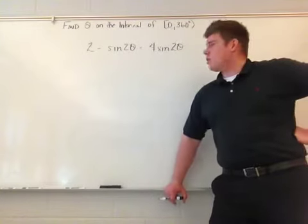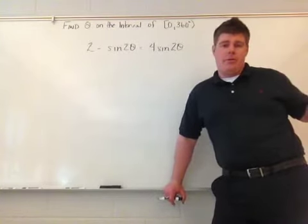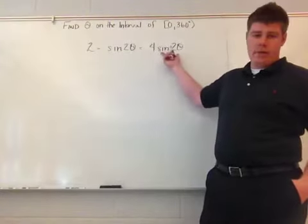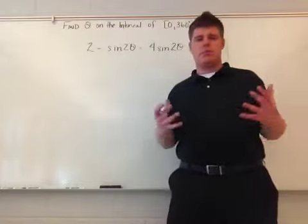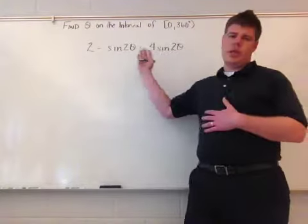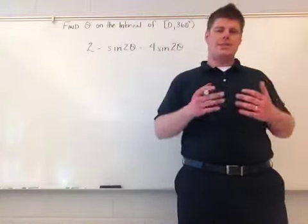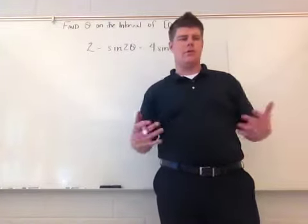So, this particular one, first things first, I want to combine all of my like terms, and sine 2 theta and 4 sine 2 theta are my like terms because they're both double angles. I don't have to worry about changing this problem because my entire function is in double angles, so I don't need to worry about changing things. We'll just talk about how we solve that at the end.